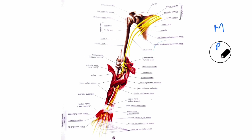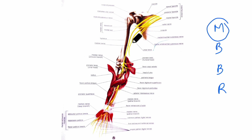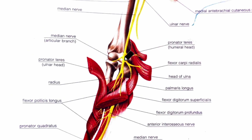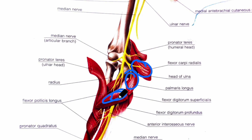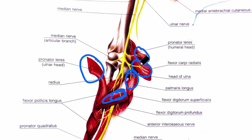The first structure is the median nerve. In the cubital fossa, the median nerve gives branches mainly to the flexor carpi radialis muscle, the palmaris longus muscle, and the flexor digitorum superficialis muscle. After supplying these muscles, it leaves the fossa by passing between the two heads of the pronator teres muscle — the ulnar head and the humeral head.